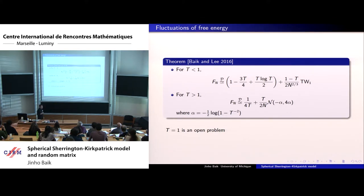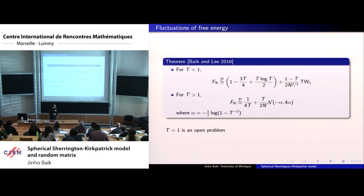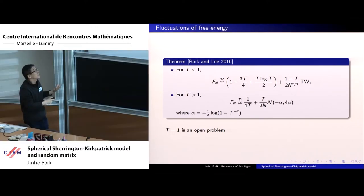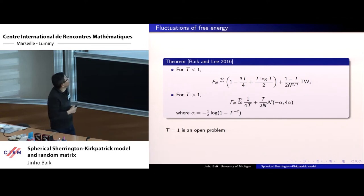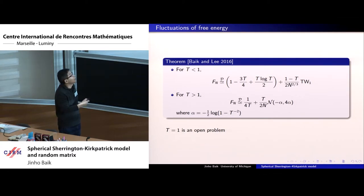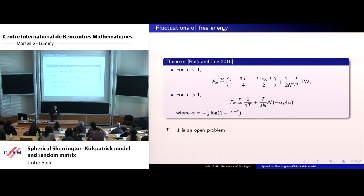On the other end, when t is bigger than one (i.e., beta is small, high temperature), the leading term becomes one over four t. The fluctuation is at order one over n — much smaller than one over n to the two-thirds — and is given by a Gaussian distribution with mean minus alpha and variance four alpha, where alpha equals log of (1-t)^{-2}. As t approaches one, this log term blows up, so there is a large term divided by n. The t equals one critical case remains open.